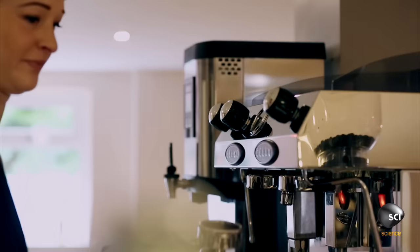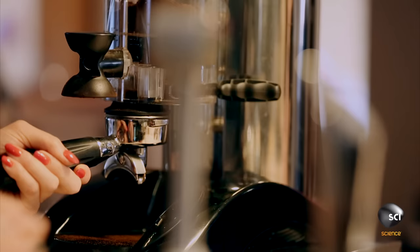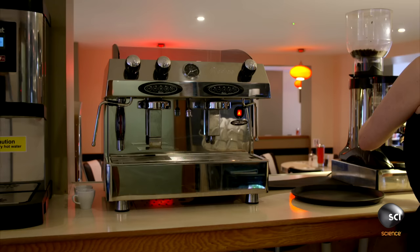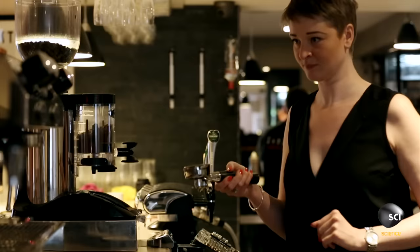The brew head has one final job to get right. Too much water will dilute the flavor. Too little, and the coffee beans won't get wet. How does it control the flow?